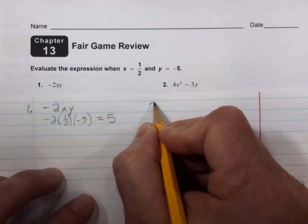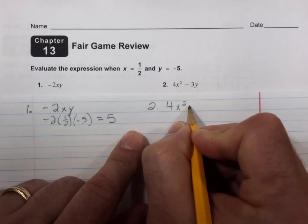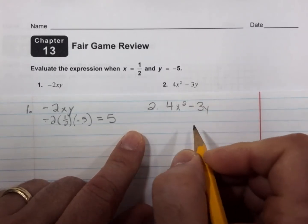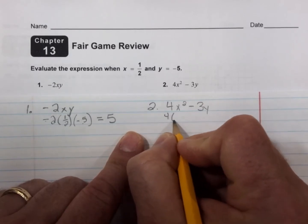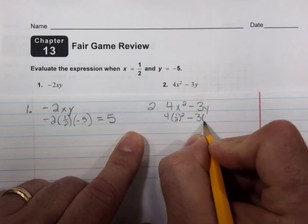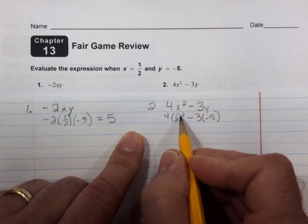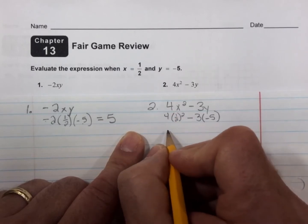Number 2. 4x² - 3y. 4(1/2)² minus 3 times -5. We'll square this first. 1/2 times 1/2 is 1/4.